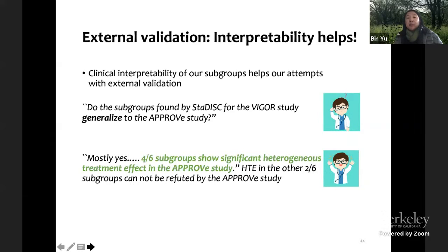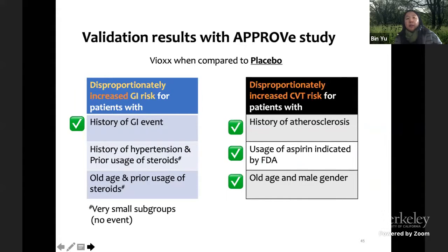So the APPROVE study was a later study with smaller number of patients. But the treatment is still Vioxx, but the control arm is placebo. Their primary purpose is really reduce the risk of polyps in individuals with recent history of these tumors. So it's a different aim, but still relevant because you also look at Vioxx. However, the trial was terminated earlier because of high cardiovascular toxicity and they withdrew the drug from the market. Because we had very interpretable rules from subgroups, it's very easy to compare. We asked, do the subgroups found by our method for the VIGOR study generalize to the APPROVE study?